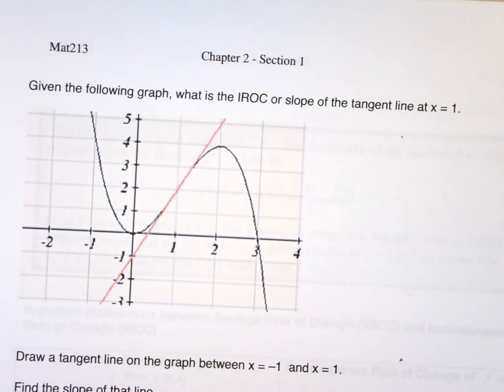Given the following graph, what is the IROC, or the slope of the tangent line, at x equal 1?